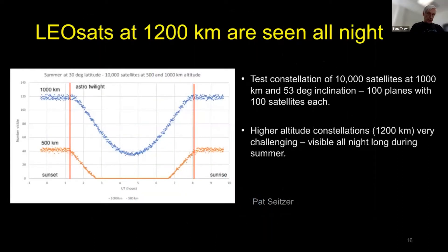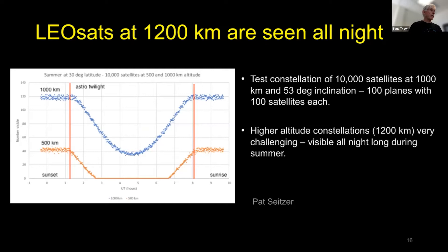The problem is if you have satellites that can be seen all night long — that will happen if you have your satellite up above about 600 kilometers. A simulation where 10,000 satellites were put at 1,000 kilometers shows them visible basically all night long, which is bad news in the summer season. If you put them below 600 kilometers — say 500 kilometers — you can see them really only in twilight. Unfortunately, one of the companies has their satellites at 1,200 kilometers.